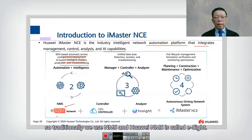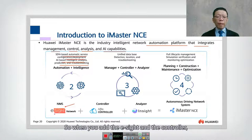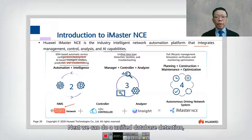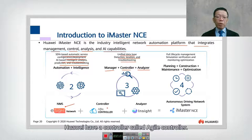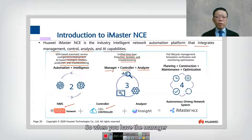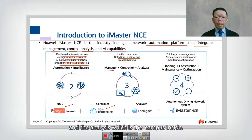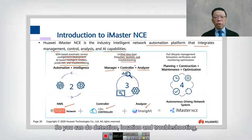Traditionally we used NMS, and the Huawei NMS is called eSight. When you add eSight and the controller, you have automation and intelligence. Next, we can do unified database detection, location, and troubleshooting. Huawei also has a controller called the Agile Controller, used for authentication purposes. When you combine the manager (eSight), the Agile Controller, and the analysis tool (Campus Insight), you have a three-in-one solution for detection, location, and troubleshooting.